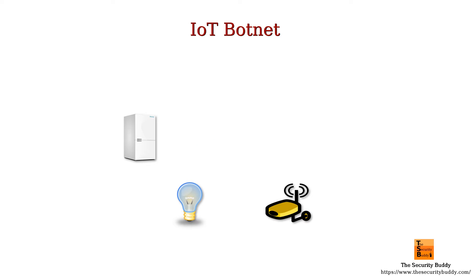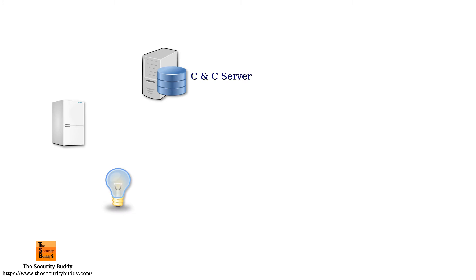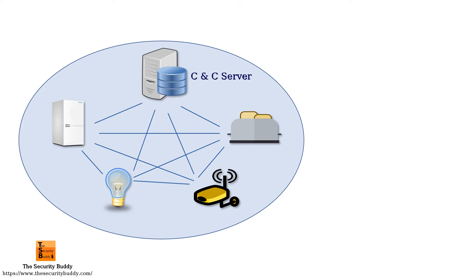When attackers compromise a large number of IoT devices and create a botnet, we call it an IoT botnet. Attackers often scan for vulnerable IoT systems and exploit the security vulnerabilities to compromise those IoT devices. Many times users configure an IoT system with weak credentials or forget to change the default credentials, and sometimes these IoT systems contain security vulnerabilities. As a result, attackers can exploit these vulnerabilities and turn the IoT devices into bots.